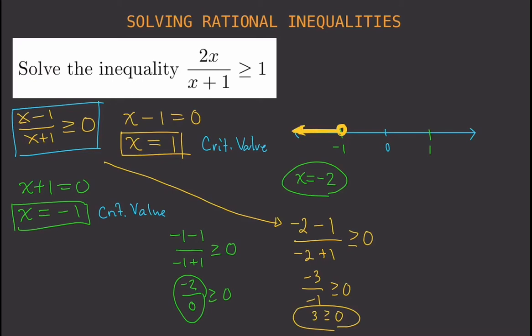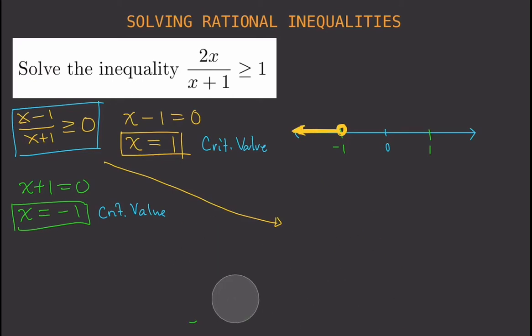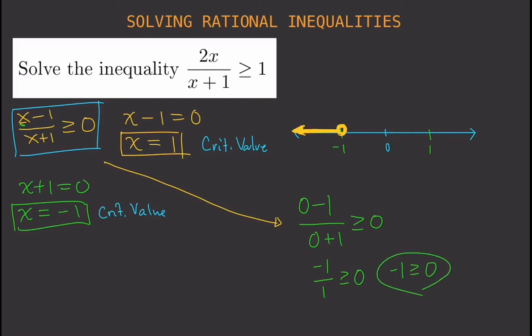The next interval to test is from negative 1 to 1. Pick a value from that interval — I'll use 0. Substituting x equals 0 gives 0 minus 1 over 0 plus 1, which is negative 1 over 1, which is negative 1 greater than or equal to 0. That is false, so this interval is not a solution and we don't shade it.